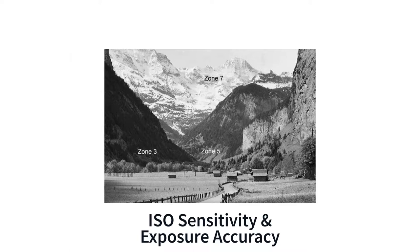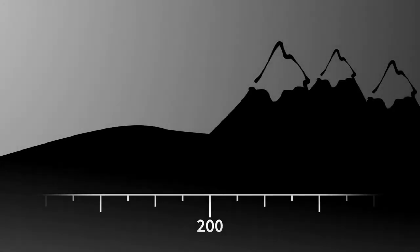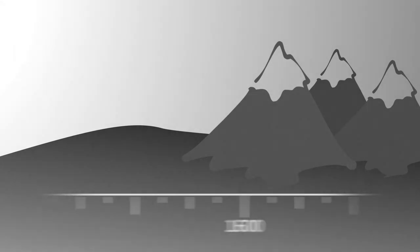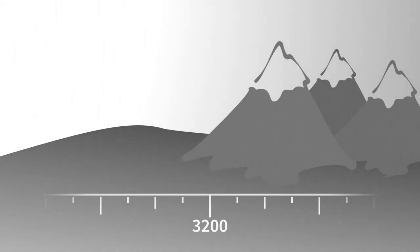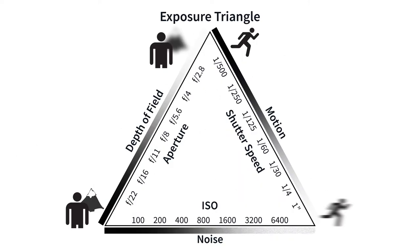ISO sensitivity or ISO speed measures an image sensor's ability to respond to light. The ISO standard 12232 defines how camera manufacturers should determine an index exposure rating, which is rounded to a standard set of values to match traditional film speeds. Higher sensitivity allows photographers to reduce motion blur by taking a faster exposure, or capture a wider depth of field by reducing the aperture.